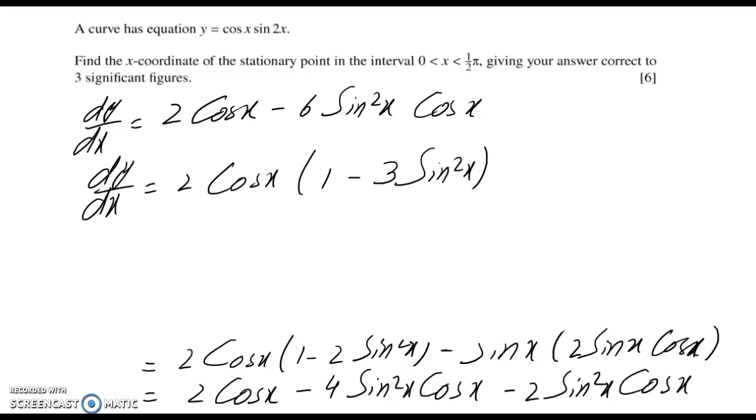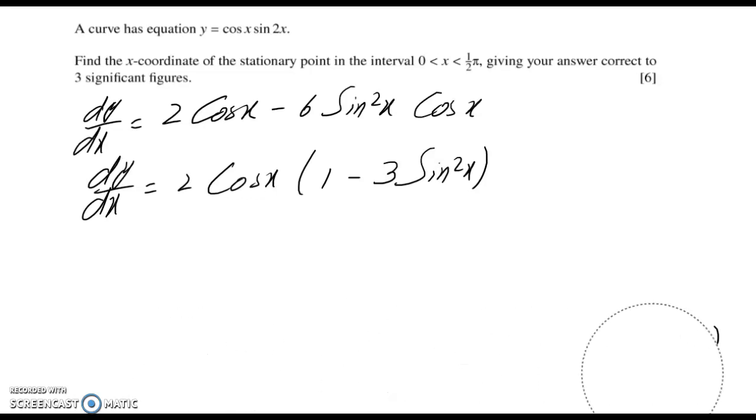Now, to find the stationary point, we set the first derivative equal to 0. Therefore dy/dx = 0, which means 2 cos x(1 - 3sin²x) = 0.